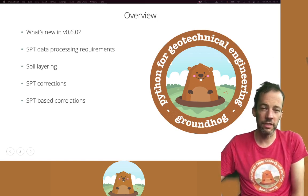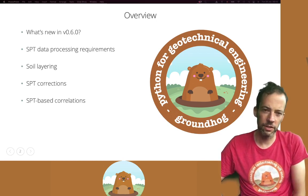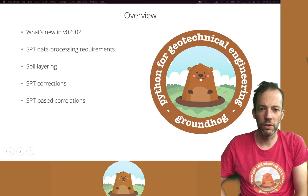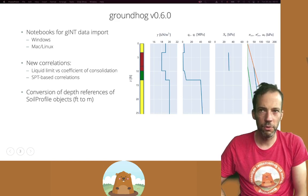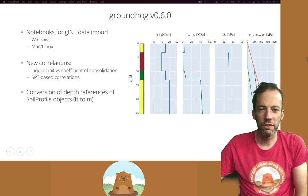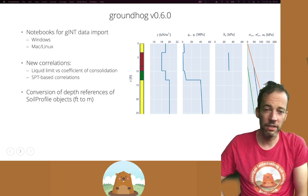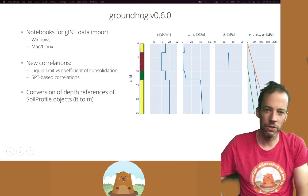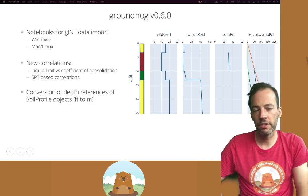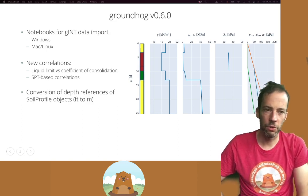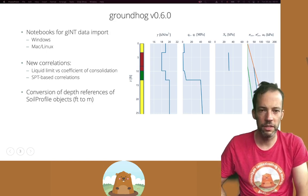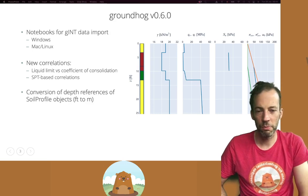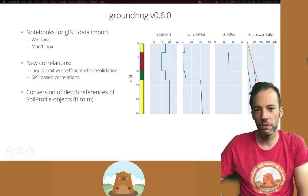We'll look at how to ingest data, how to establish a soil layering and take into account the properties of the SPT sampler, and then we'll apply corrections and perform some SPT-based soil parameter correlations. In Groundhog 0.6 there are a couple of new features. First of all, there are two guides to get data from Gint into Python. There are also a couple of new correlations both in the CPT module and other modules, and of course the correlations now introduced for the SPT. We've also considered colleagues using imperial units, so it's becoming easier to convert soil profile objects between meters and feet or any other units desired.